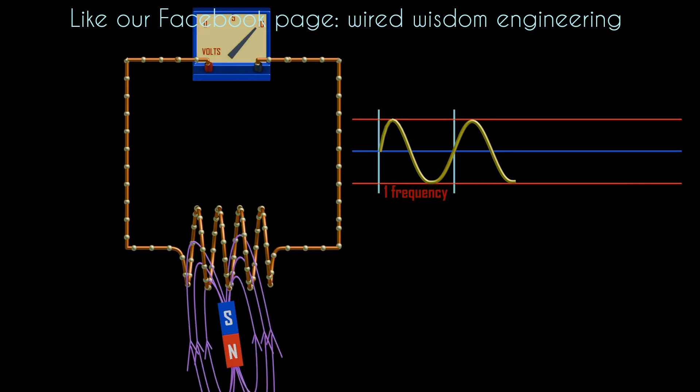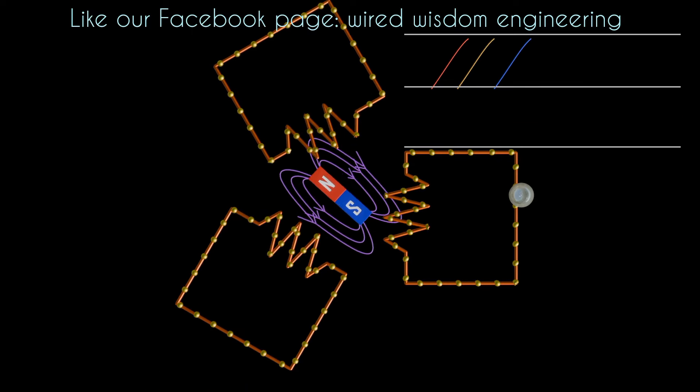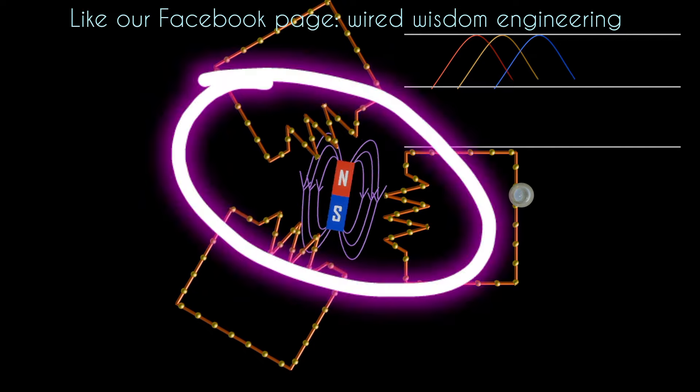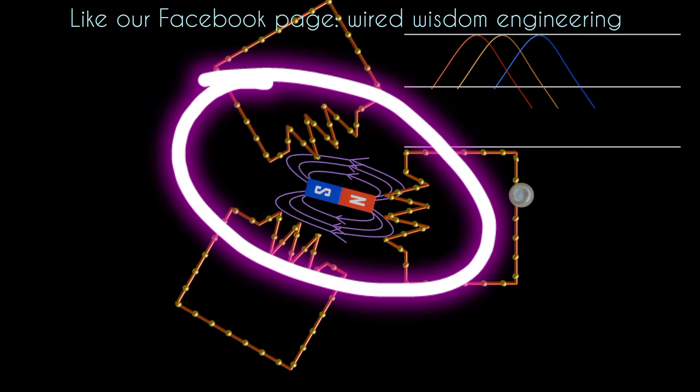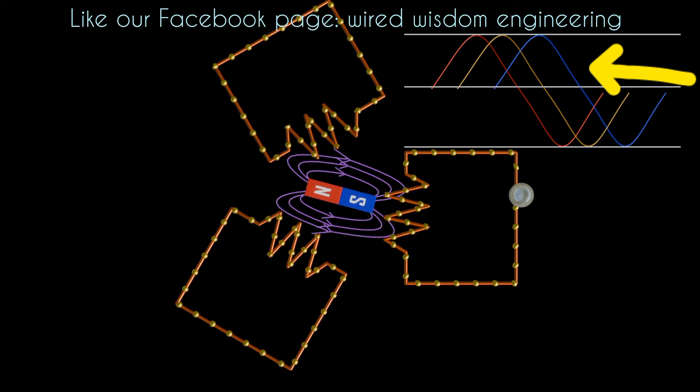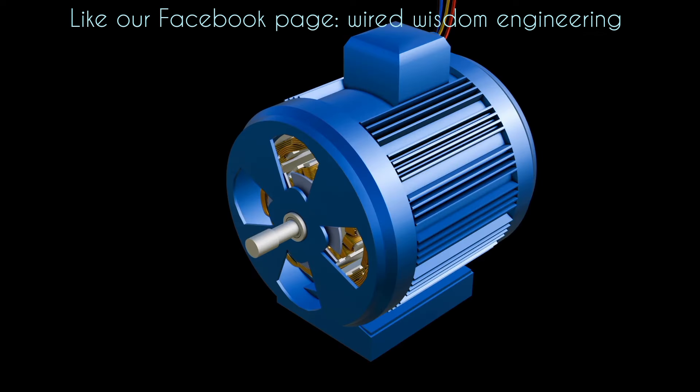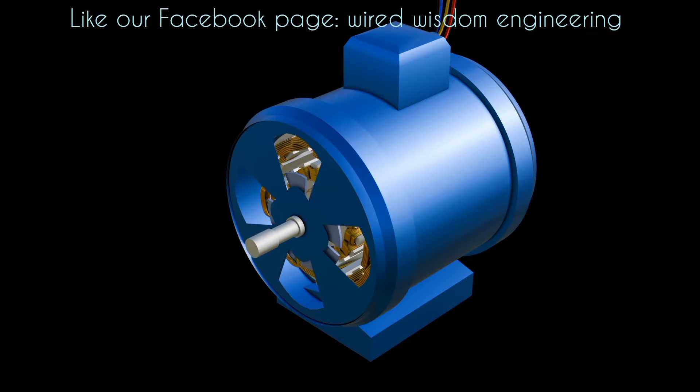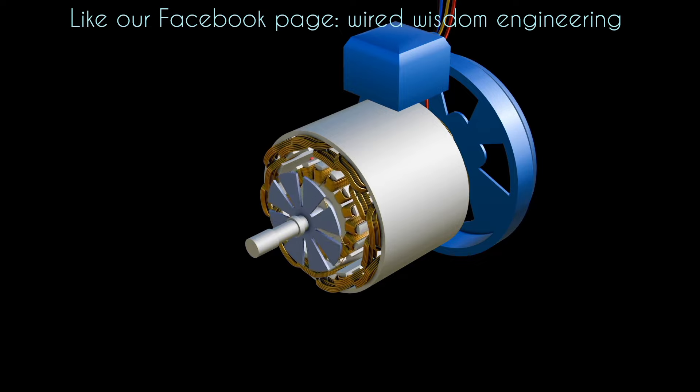When we talk of three-phase alternating current, then the coils are displaced 120 degrees phase from each other. Also, the sinusoidal waveforms plotted are displaced 120 degrees phase from each other. Also, for more about electricity generation, check our alternator video.